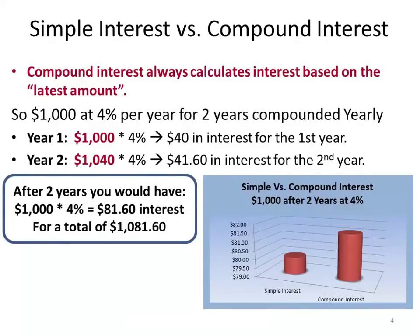Compound interest always calculates the interest based on the latest amount. So let's take that same $1,000, put it into a savings account at 4% per year, but now it's compounded yearly. At the end of the first year, I will get $40 interest. I take that $40 and add it to the principal of $1,000, so now I have $1,040. I get interest on that $1,040, which makes my interest at the end of the second year $41.60, for total interest of $81.60 and a total of $1,081.60 in my savings account.